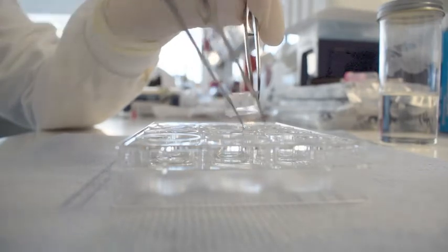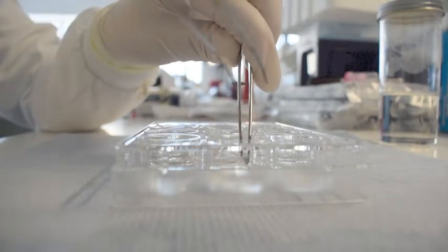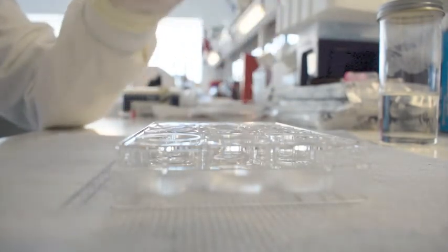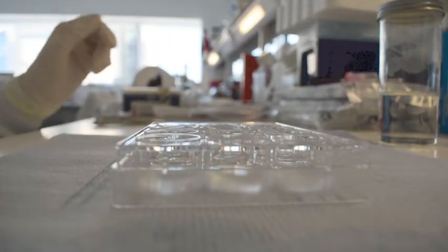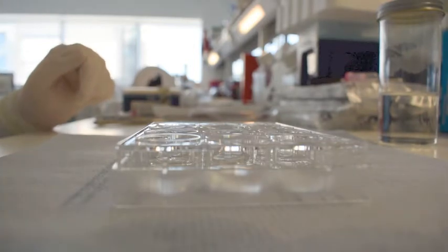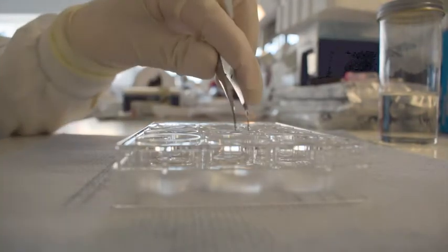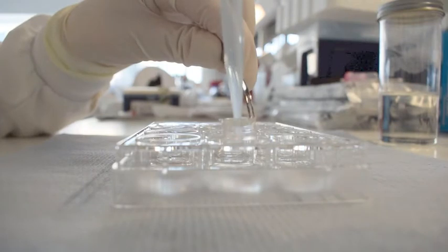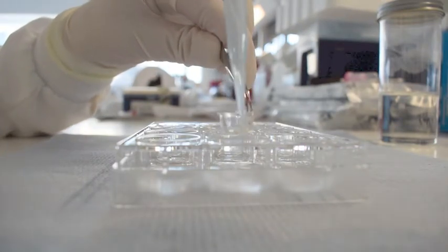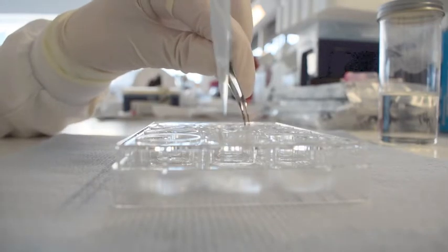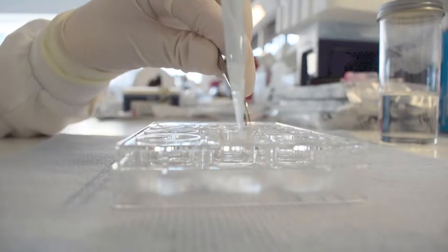This is then placed in a well containing 1 millilitre of trypsin EDTA. Using a pipette, the tissue cup is then washed in trypsin EDTA to remove any cells that remain within the cup.